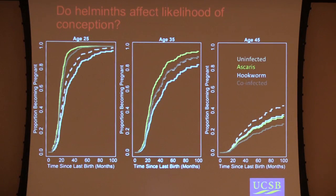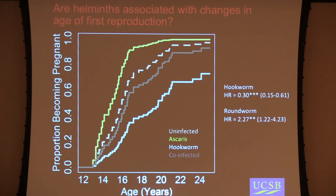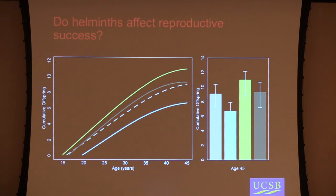Helminths do seem to affect the likelihood of conception — these are highly significant effects. Looking at age at first reproduction, we see something very similar: individuals in the nulliparous sample infected with roundworm (ascaris) show an increased likelihood of becoming pregnant at an earlier age, while women with hookworm show a later age of first reproduction — the same sort of pattern. Adding these two effects together, they could have fairly significant effects on the number of offspring, potentially a difference of a couple of children, based on projections assuming always-infected status throughout the lifespan.